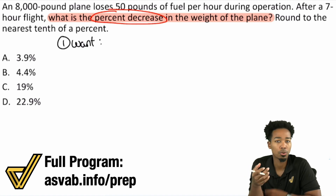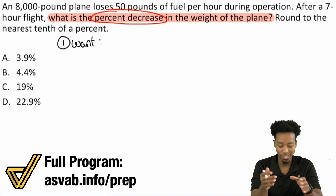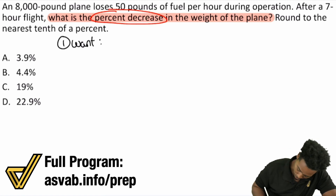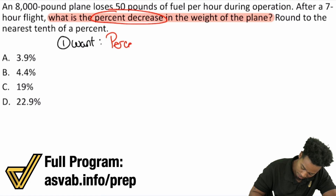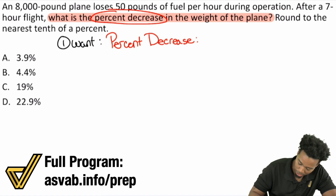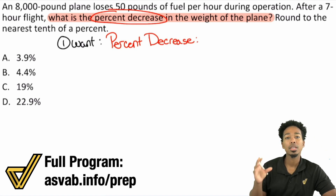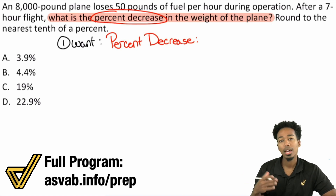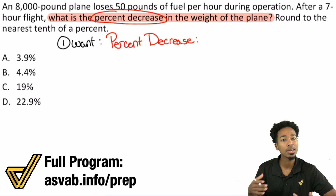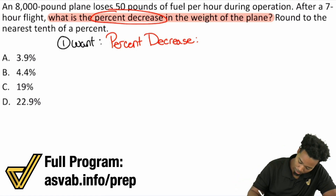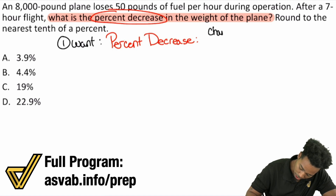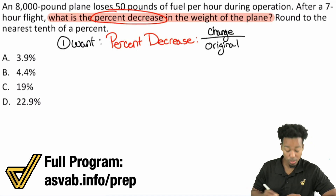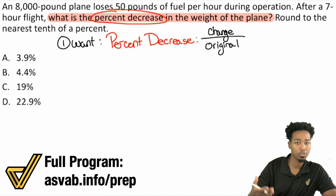To find percent decrease or percent change in general, what you need to do is this: percent decrease is defined as the amount of the change divided by the original amount, in fraction form. Then you multiply by 100 to make it a percent. So percent decrease equals the change divided by the original amount. Let's keep that in mind as we go to the next step.